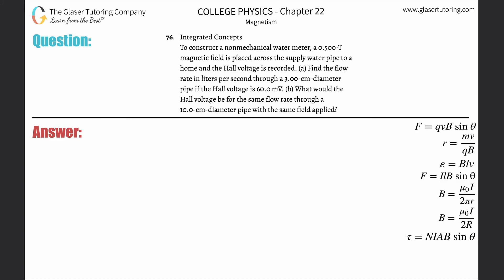Number 76, integrated concepts. To construct a non-mechanical water meter, a 0.5 Tesla magnetic field is placed across the supply water pipe to a home and the Hall voltage is recorded. Letter A: Find the flow rate in liters per second through a three centimeter diameter pipe if the Hall voltage is 60 millivolts. Check out number 22 also. I did a little discussion about Hall voltage, so I'm going to assume that you have watched that video.